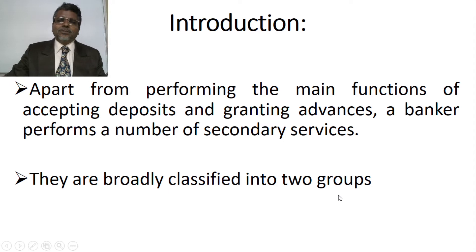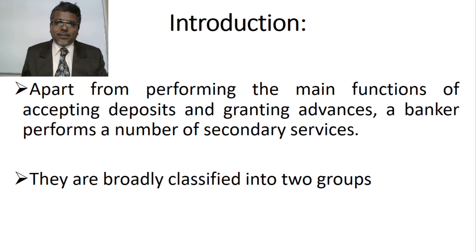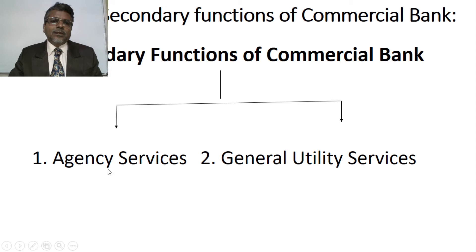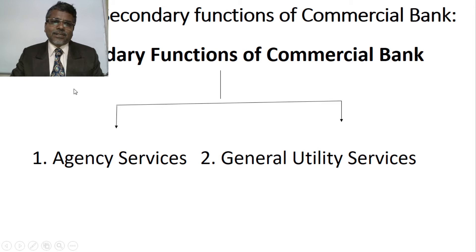Along with the primary functions of a commercial bank such as receiving of deposits and lending of loans, a banker performs a number of secondary services. The secondary functions of commercial banks are broadly divided into two groups: agency services and general utility services. Agency services are required by the banker to retain the customer, and general utility services are provided to attract new customers.